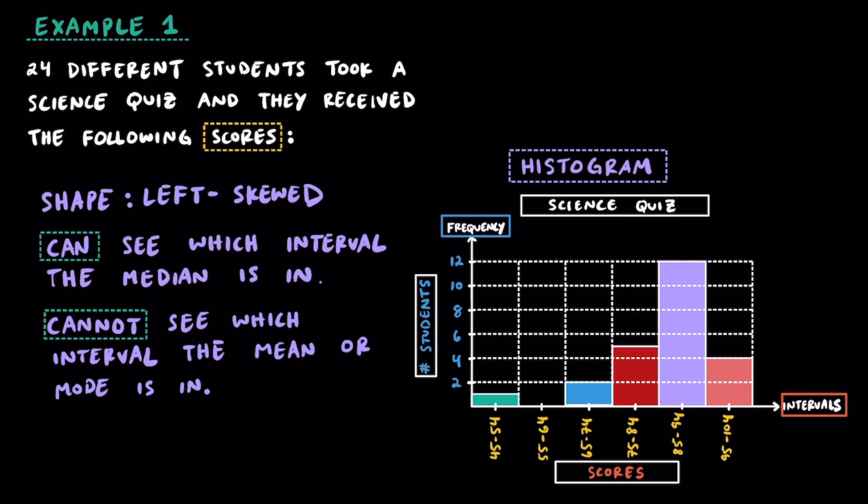And there you have one full example so far where we had a statistical question, we then collected data, after that we filled in a frequency table, and then finally, we made a histogram.